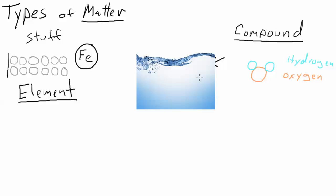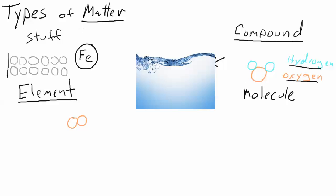The key here is that the type of matter we call a compound is made up of these groups of atoms that we call molecules. In a compound it's always two or more different types of elements bonded together - it can't be the same element bonded together, because that would still be an element. So an oxygen molecule made up of just oxygen is still an element, but water is a compound because it's two or more different types of atoms bonded together.